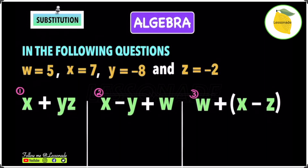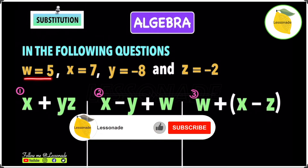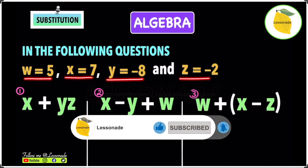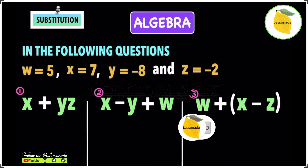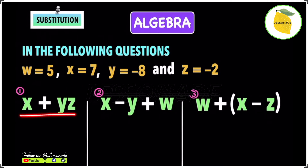Let's have a look at another example in algebra substitution. In the following questions: w equals 5, x equals 7, y equals minus 8, and z equals minus 2. Let's start with the first example, which is x plus yz.